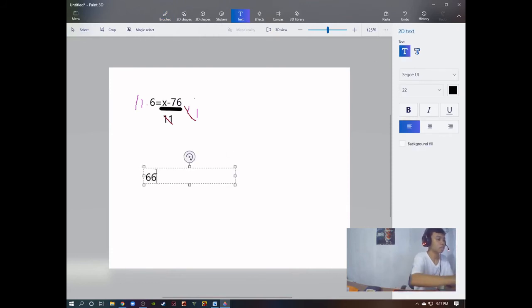So, 66 equals to x minus 76. And we're going to add to the other side. 66 plus 76. Negative 76 and the positive 76.